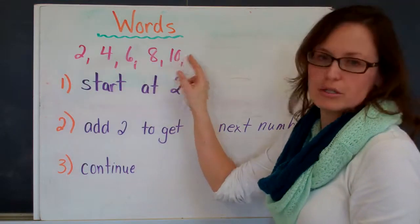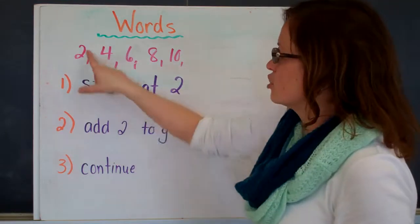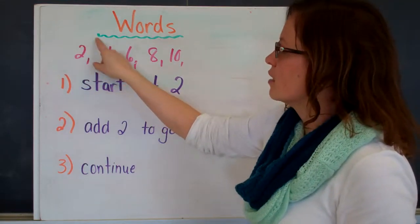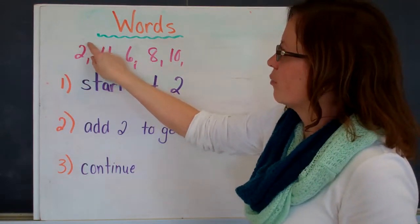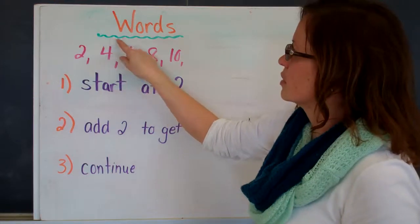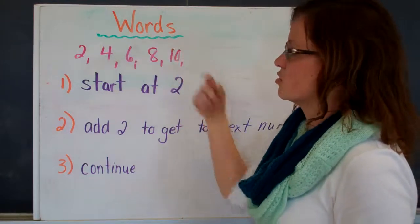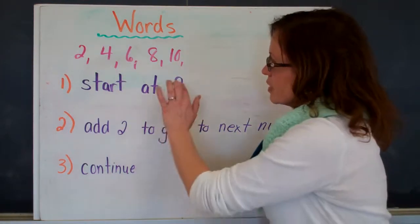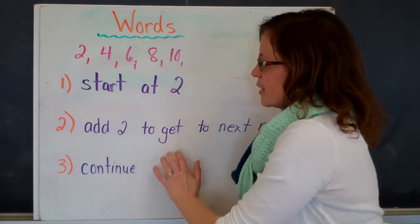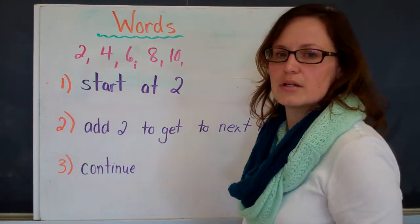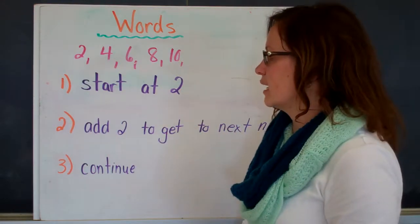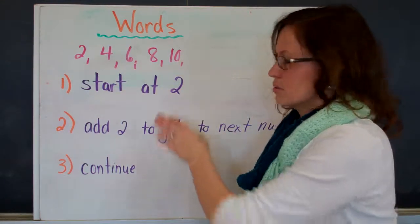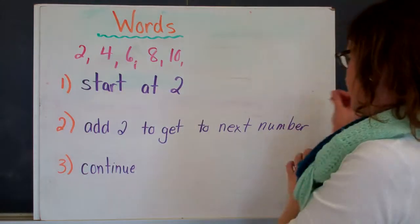Plus 2, plus 2, plus 2. You should actually identify with a little arrow: plus 2, plus 2, plus 2, plus 2 on your number pattern. You should always have three steps when explaining a number pattern in words: 1, 2, and 3.